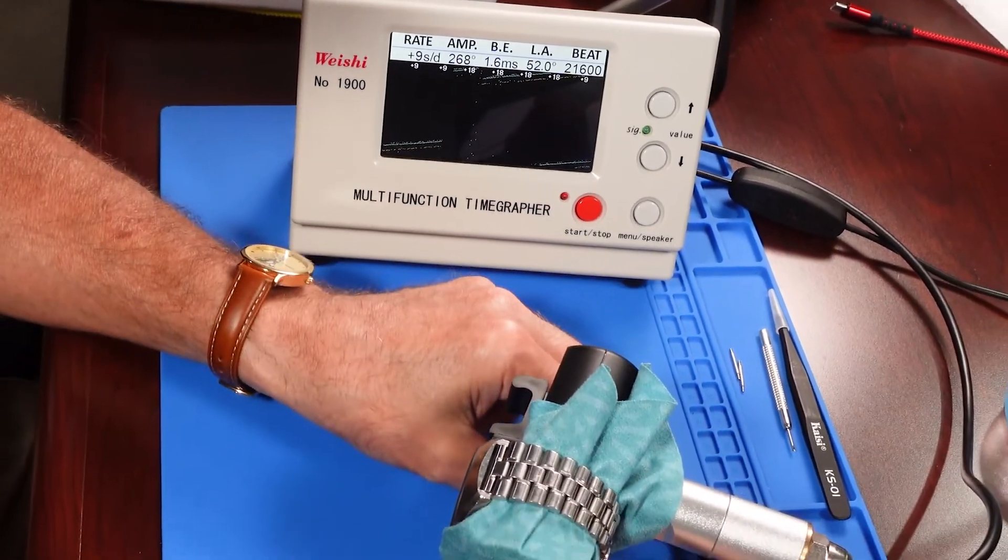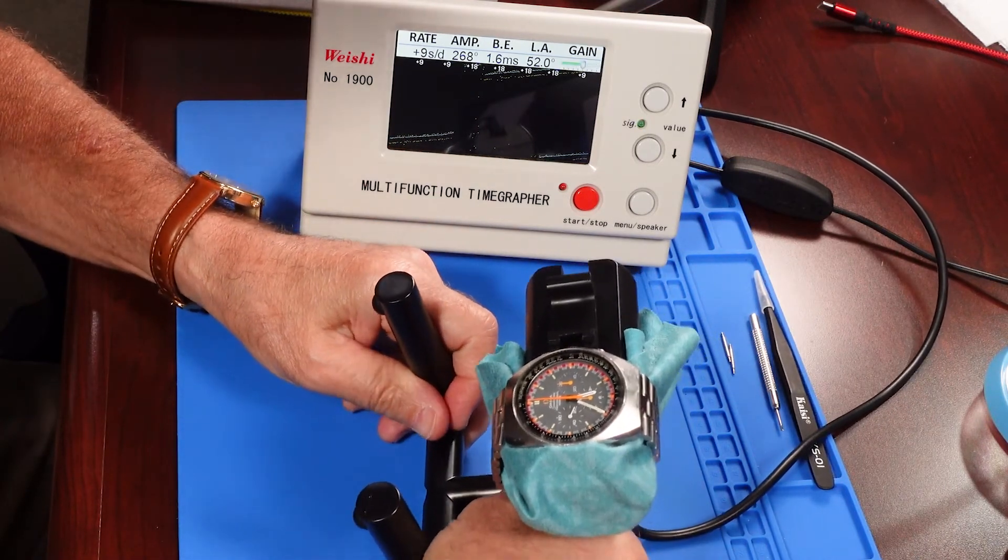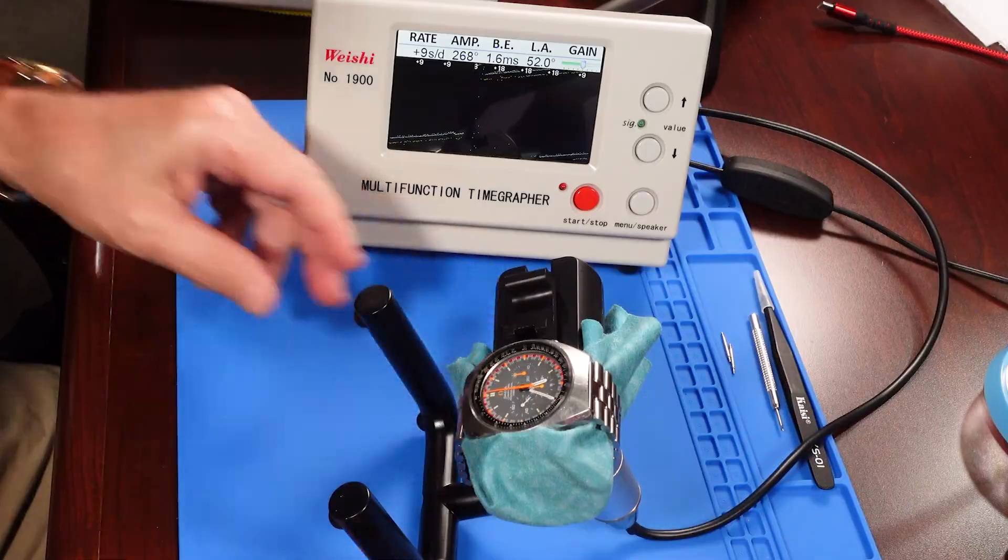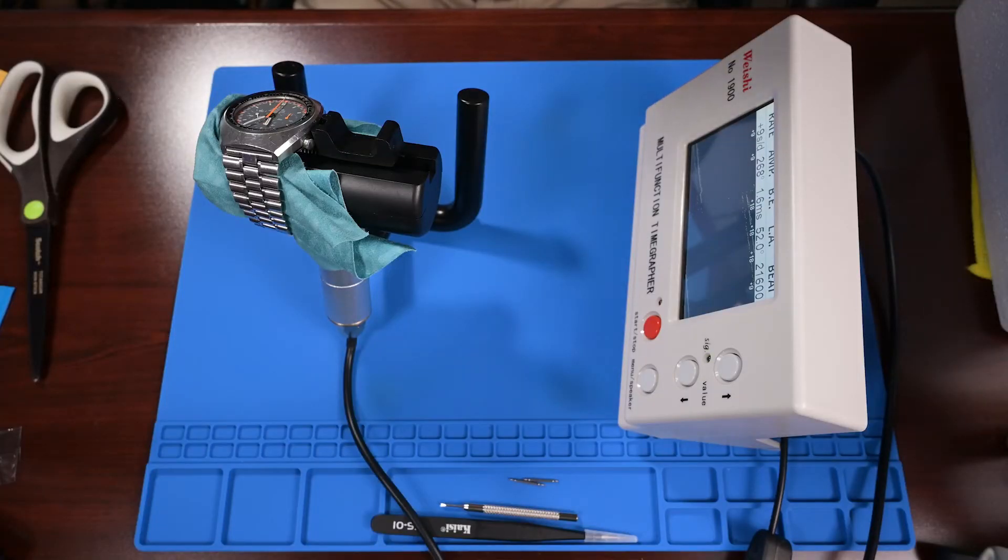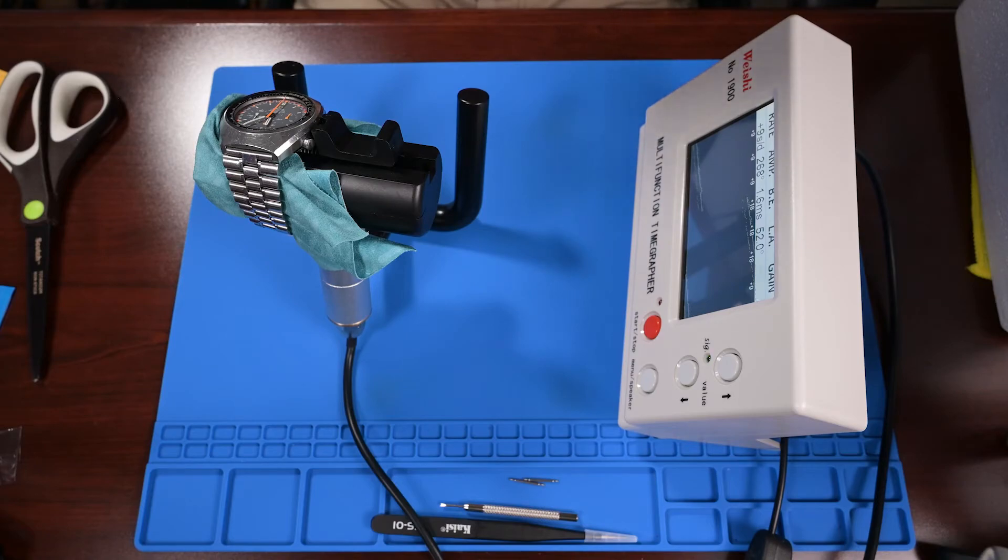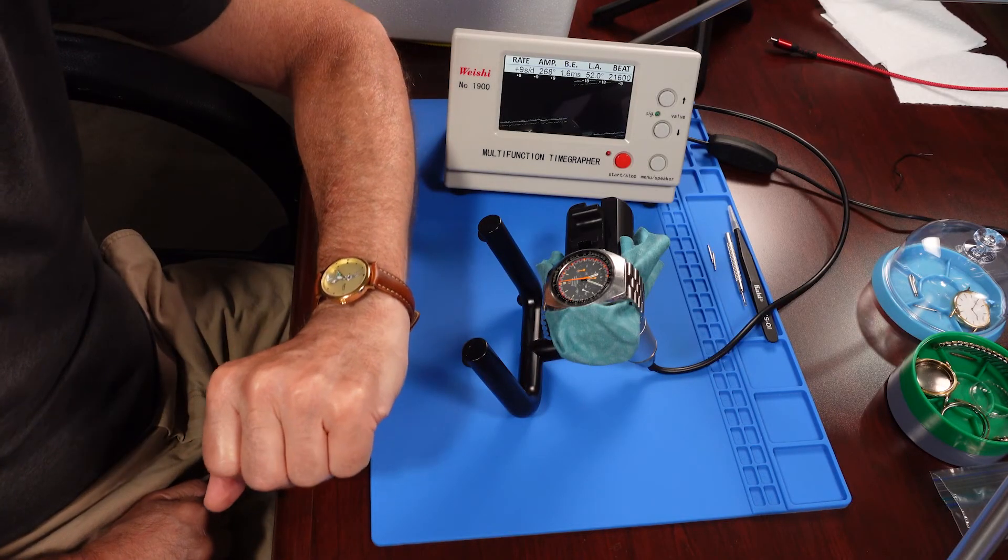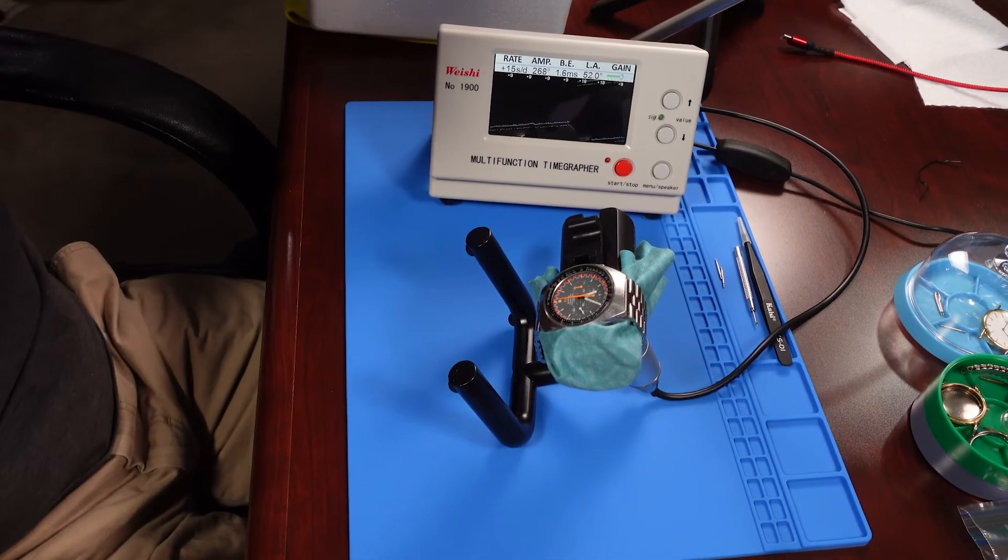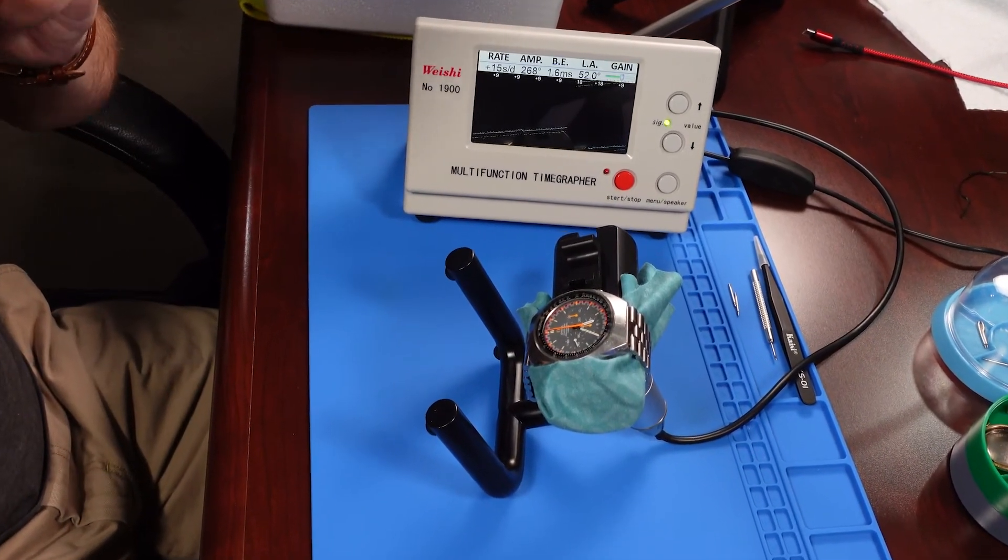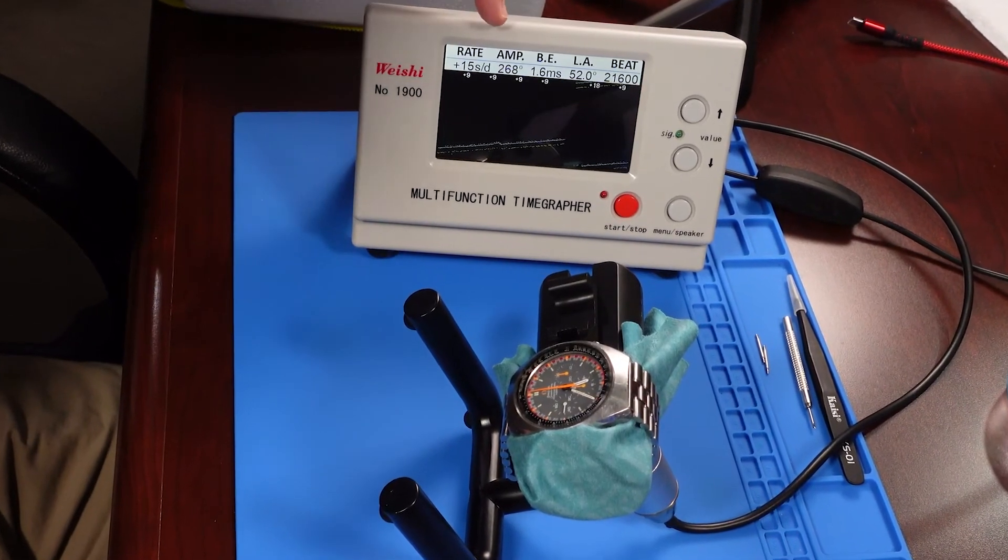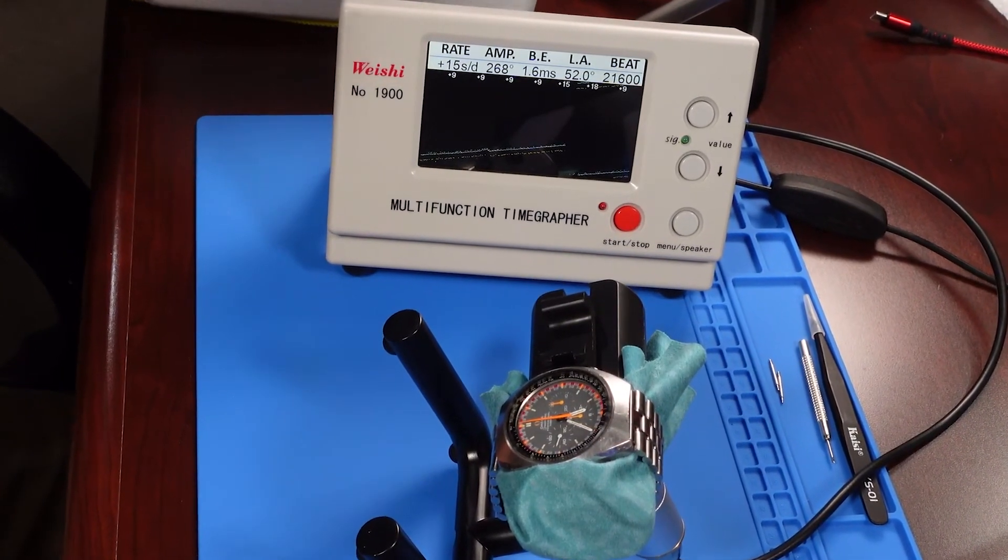Now just for giggles here, I'm gonna turn this, just kind of put it like that. Let's see if that changes. Now did you see that little bump? That's kind of where it's settled. So this is kind of the position where you would be checking your watch like this. And again, it's running a little bit fast and there's a little bit of a beat error, but the amplitude is strong - 268. That's nice.